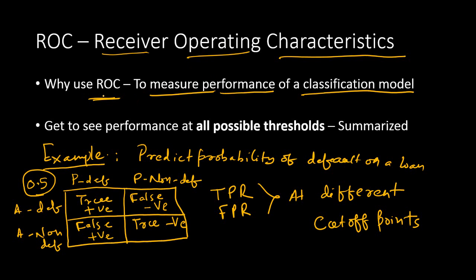Why do we need to use ROC when there are other metrics like the confusion matrix? A number of times, you will see that one needs to compare the accuracy of prediction across a number of different cutoff points. Normally, people go for 0.5 as the cutoff in classification models, but it may not be a suitable cutoff for all kinds of models. It actually depends on the domain in which the model is being built.